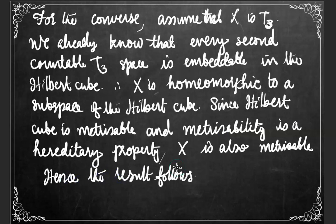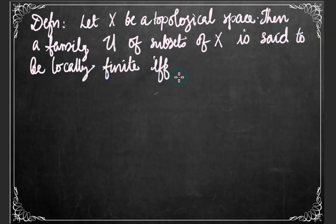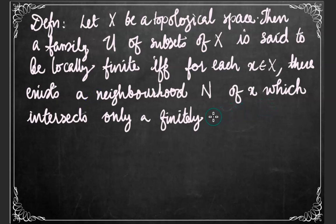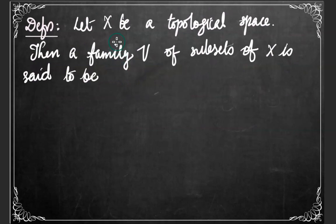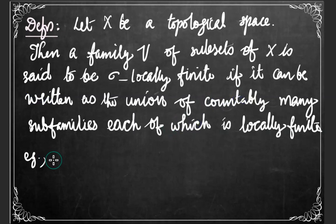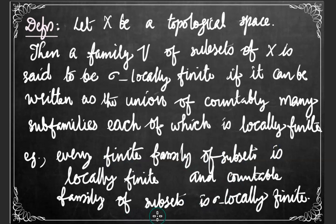Definition: Let X be a topological space. A family U of subsets of X is said to be locally finite if and only if for each x in X there exists a neighborhood N of x which intersects only finitely many members of U. Definition: Let X be a topological space. A family V of subsets of X is said to be sigma-locally finite if it can be written as the union of countably many subfamilies, each of which is locally finite. For example, every finite family of subsets is locally finite, and a countable family of subsets is sigma-locally finite.